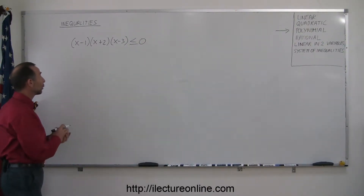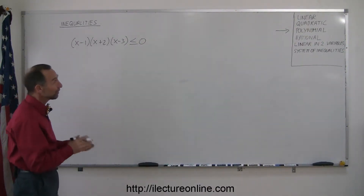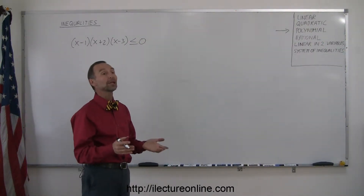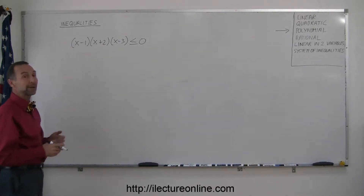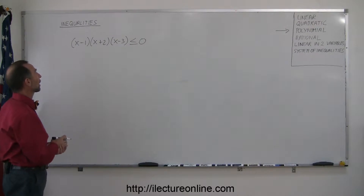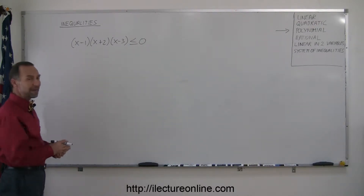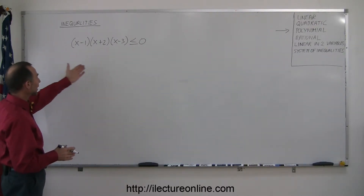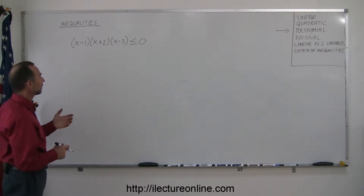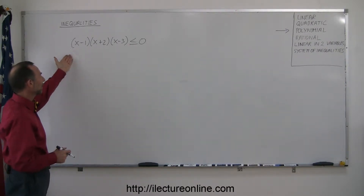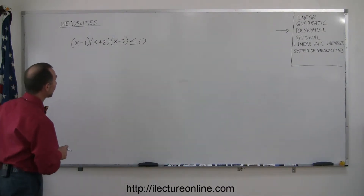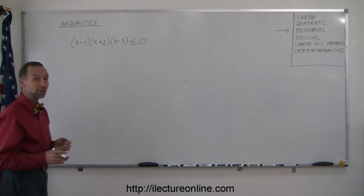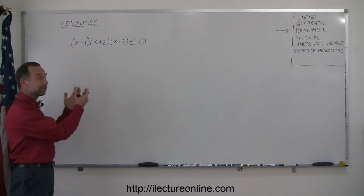This time we're going to look at inequalities of a different type. We call them polynomial inequalities because this is an inequality with an order greater than 2, larger than a quadratic inequality. To make it easy, I already factored the left side. If we were to multiply this out, we get an x cubed as part of one of the terms, but we don't want to get involved in trying to factor a polynomial — we just want to show how to solve an inequality of this type.